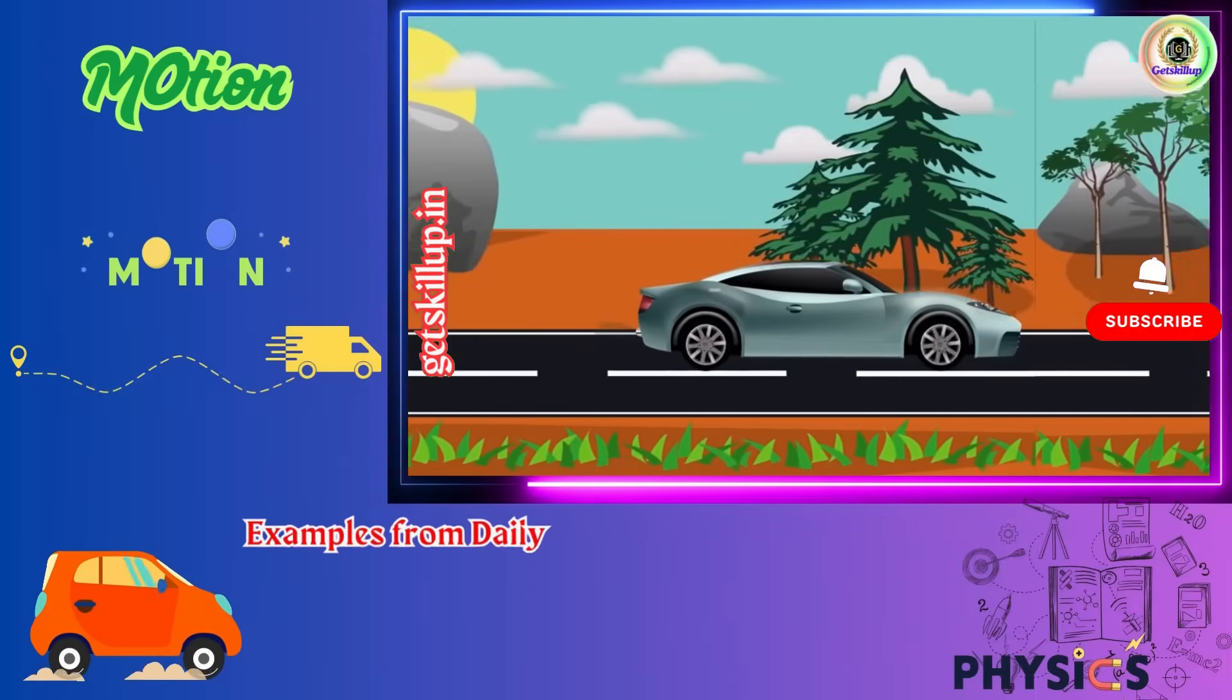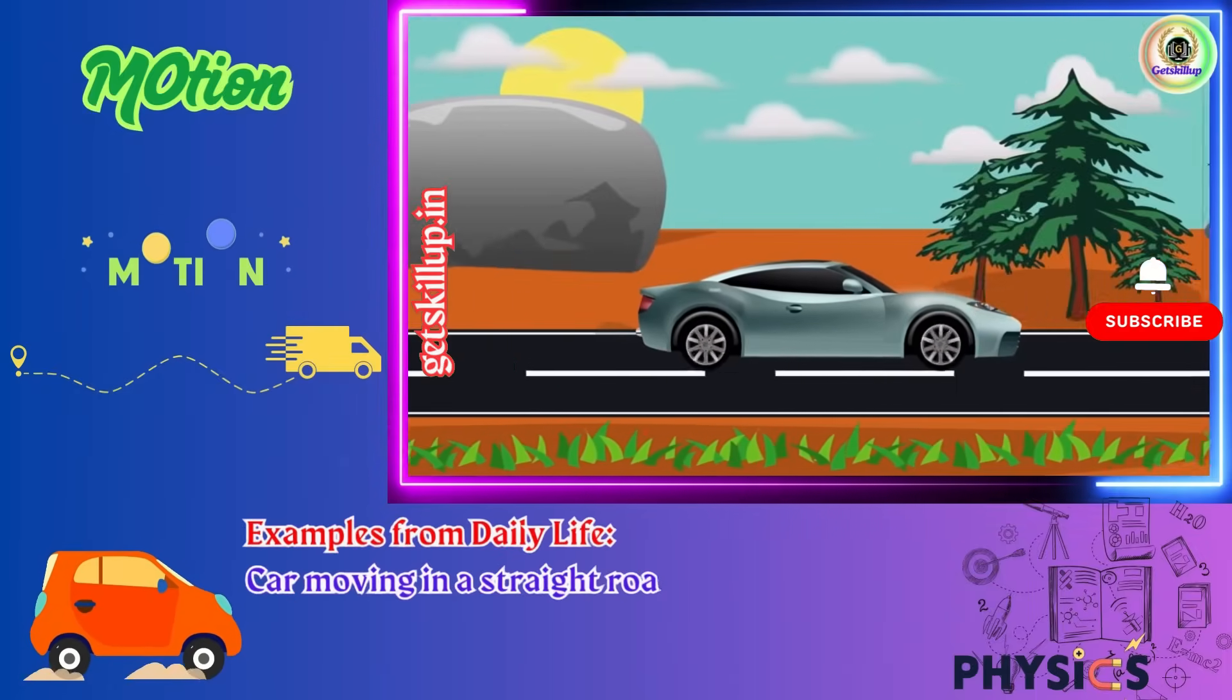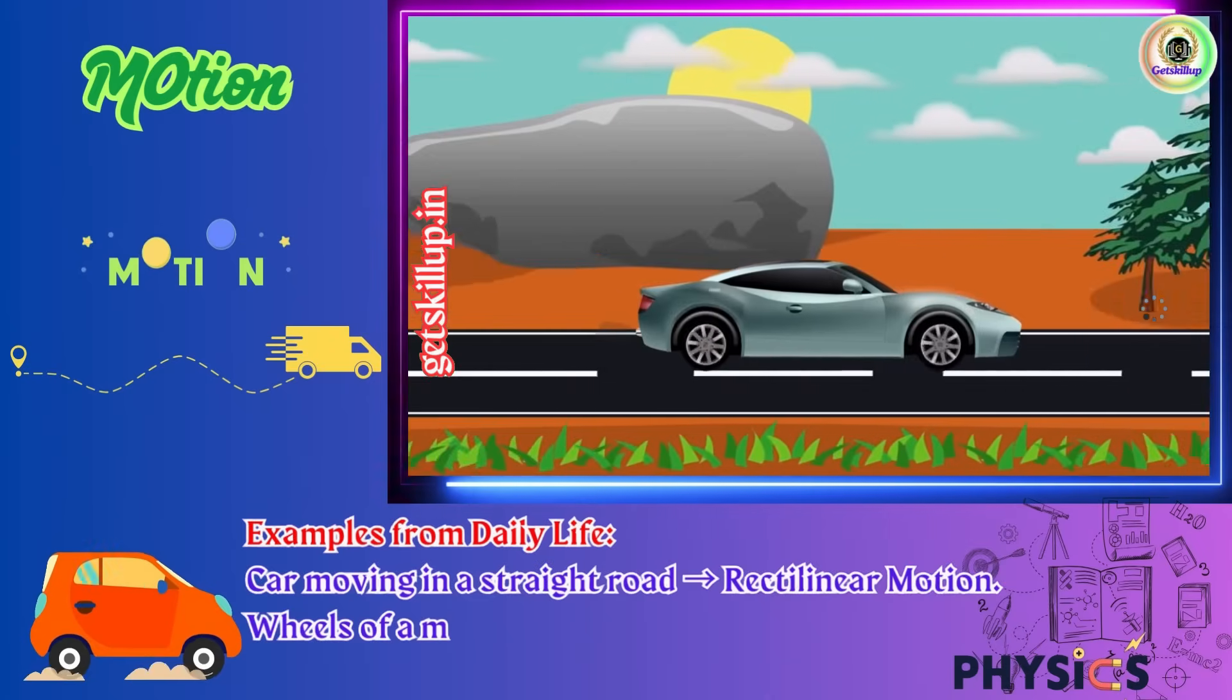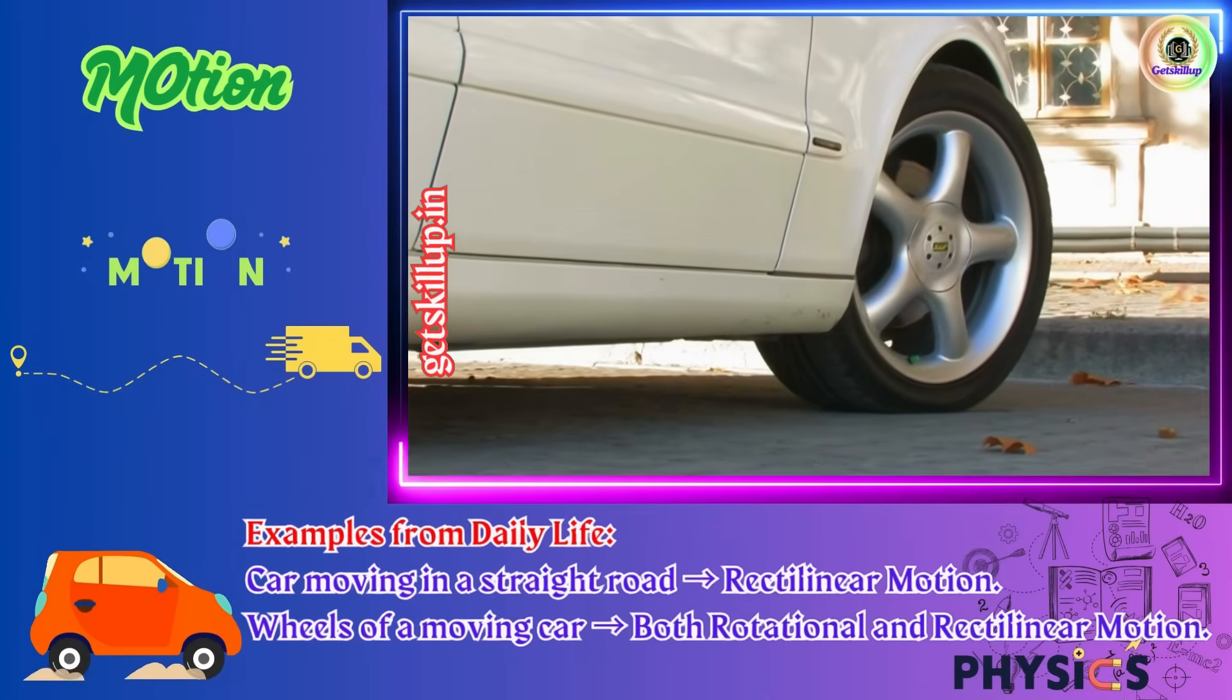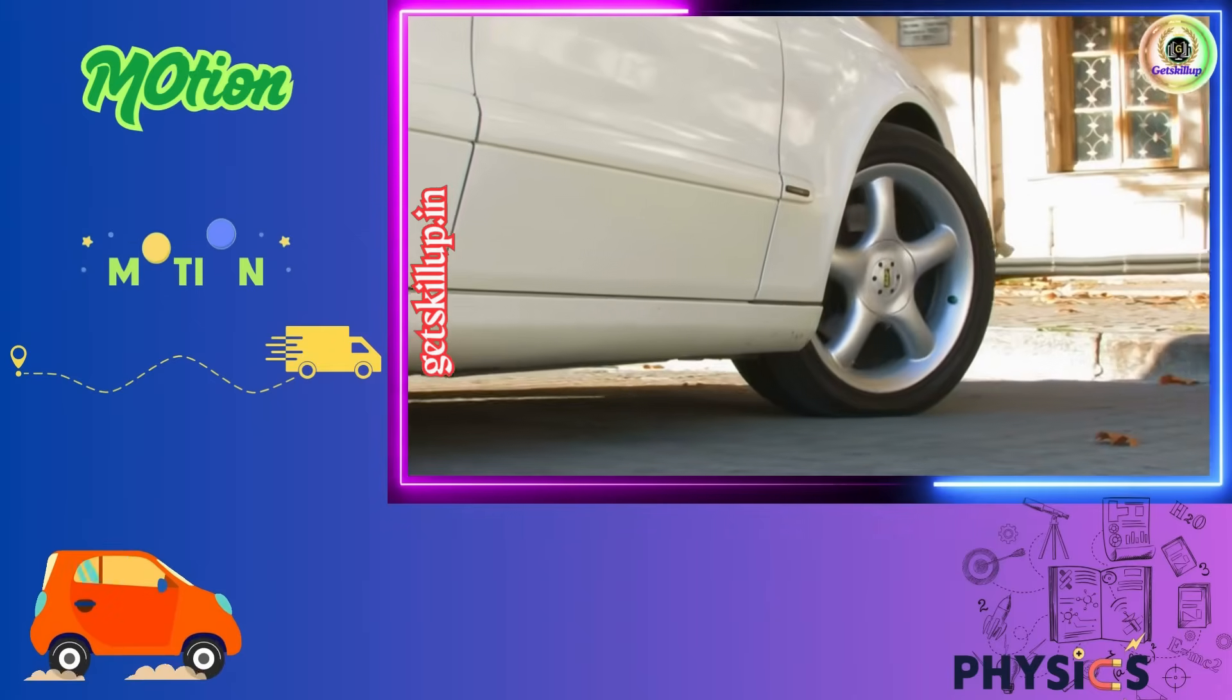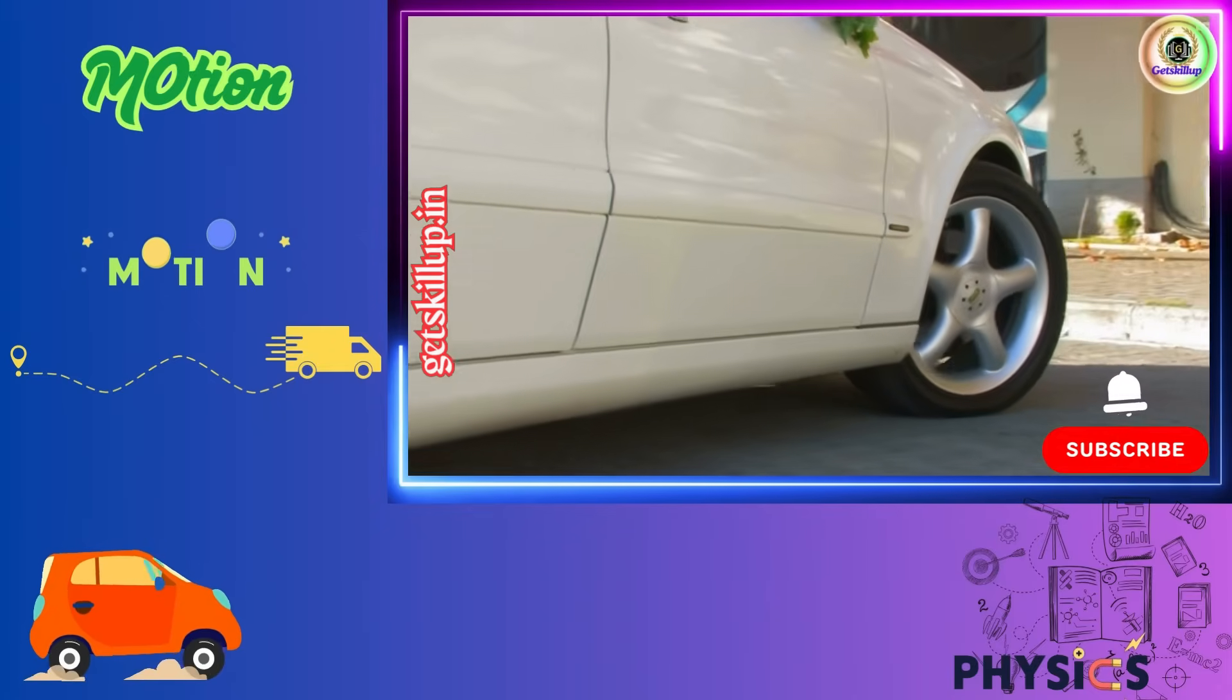Examples from daily life. Car moving in a straight road, rectilinear motion. Wheels of a moving car, both rotational and rectilinear motion. Why? The car moves straight, rectilinear, and its wheels rotate, rotational, both at the same time.